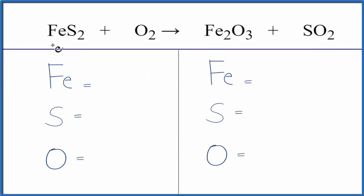In this video, we'll balance the equation for FeS2 plus O2, iron 2 sulfide plus oxygen gas. Let's count the atoms up. One iron, two sulfurs, two oxygens.